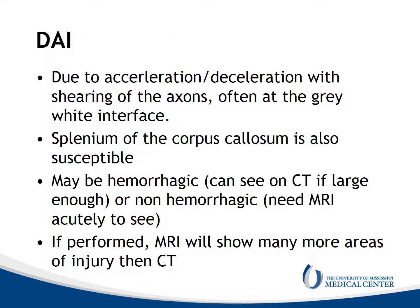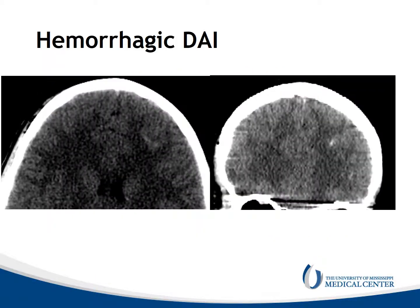Diffuse axonal injury is another source of intracranial hemorrhage in trauma. It's due to acceleration and deceleration where you get shearing of the axons, often at the gray-white interface. The splenium of the corpus callosum is also very susceptible. These may be hemorrhagic, and if large enough, we can see them on CT, or non-hemorrhagic, where MRI is needed. MRI will show far more areas of diffuse axonal injury than CT. Here's a small area of hemorrhagic diffuse axonal injury showing hyperdensity in the left frontal lobe at the gray-white junction. Subsequent MRI showed additional areas.